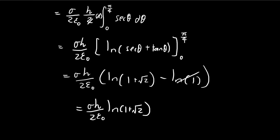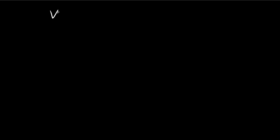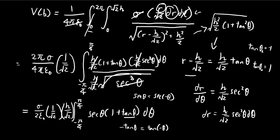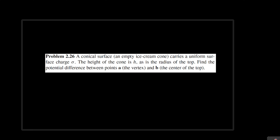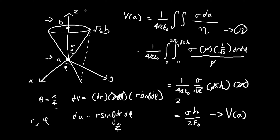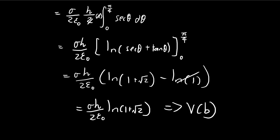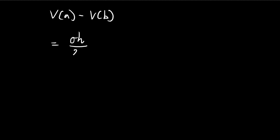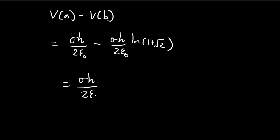Going back to the original question, we're finding the difference between the potential at point A and point B. The potential at point A is σh/(2ε), and the potential at point B, which we just found, involves ln(1 + √2). Factorizing gives our final answer for V_A − V_B.